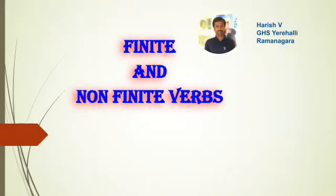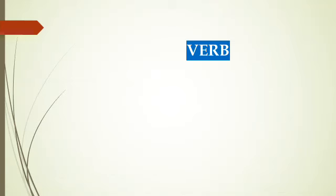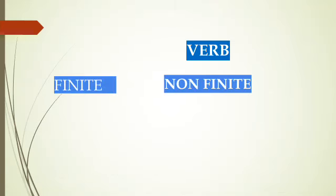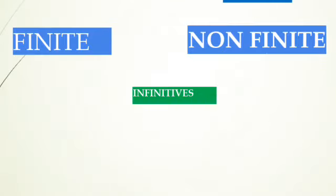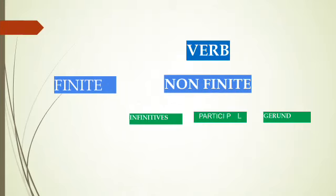Hi everyone. Welcome to English grammar videos. Here in this video you will learn about finite and non-finite verbs. Verbs mean action words. The verbs are in three forms: present, past, and participle. Verb is divided into two types: finite and non-finite verbs. In non-finite verbs there are again three types: infinitives, gerund, and participles.